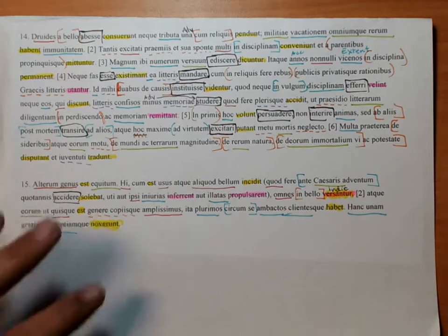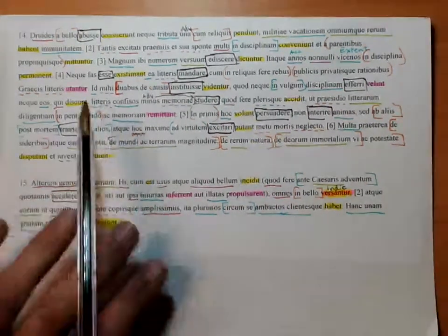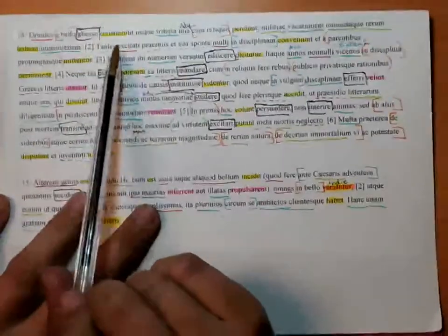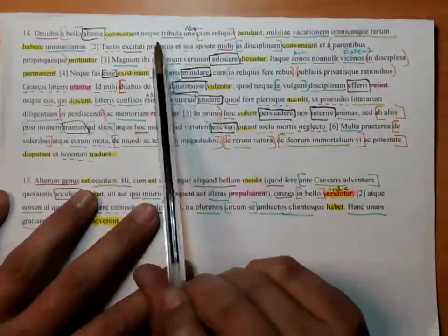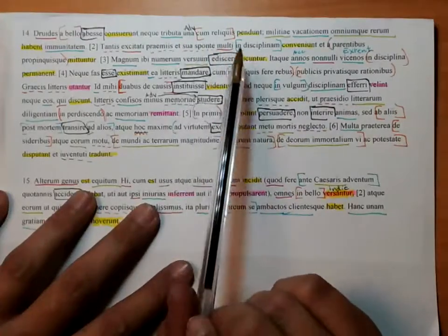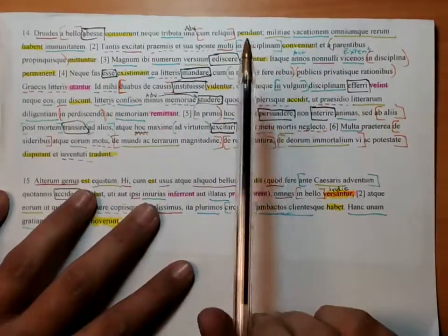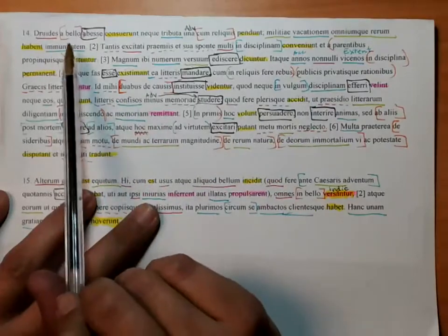Caesar Book 6, Chapter 14, getting close to the end. The Druids are accustomed to be absent from war and they don't pay tributes together with the rest. They have exemption of military service and immunity from all matters.